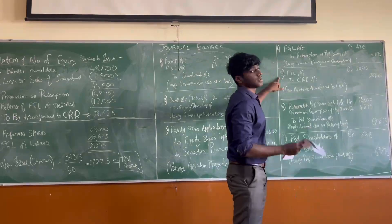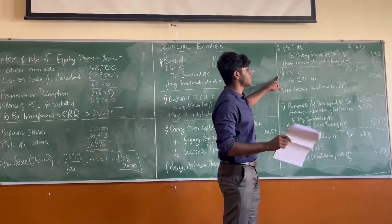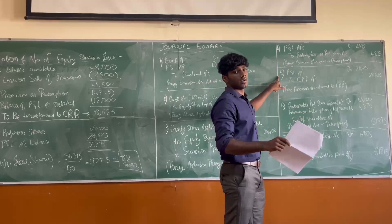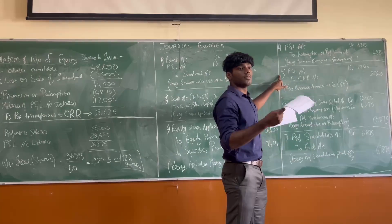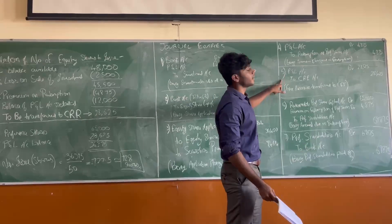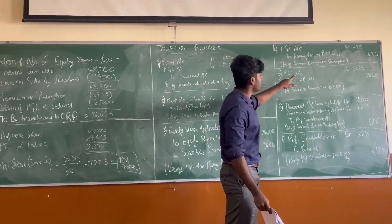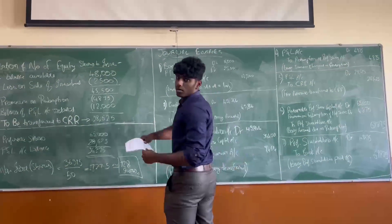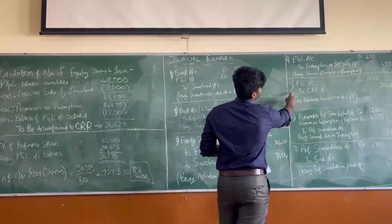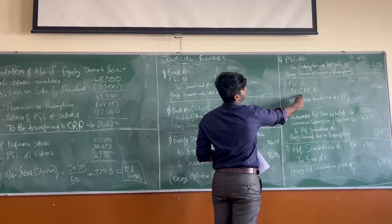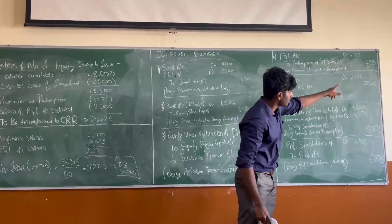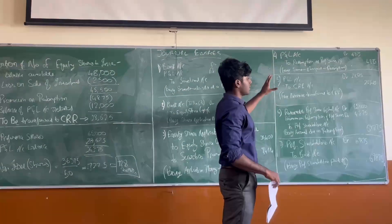Journal entry 5 is one of the most important entries — this is the Capital Redemption Reserve entry. As mentioned earlier, the general reserves amount used for redemption should be transferred to CRR. So the entry is: General Reserve account debited 28,625, to Capital Redemption Reserve account 28,625. This transfer is now complete.